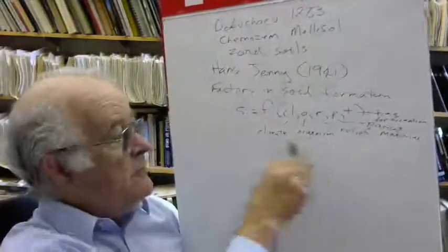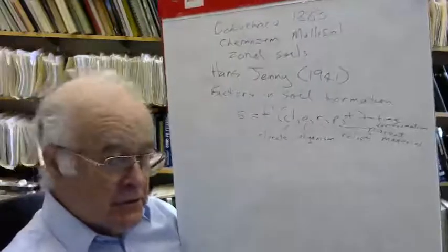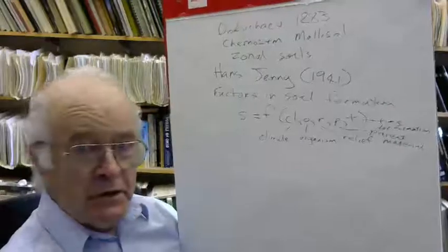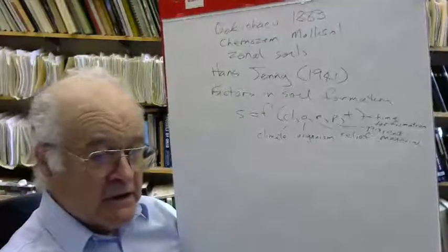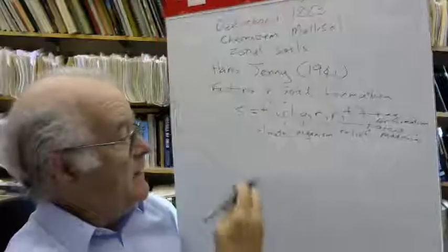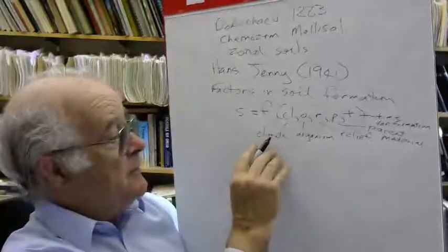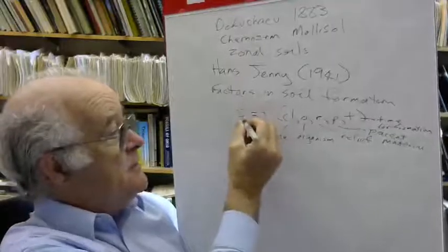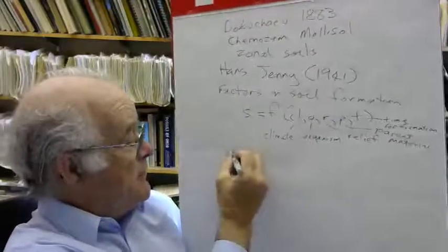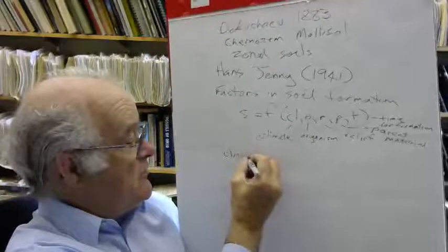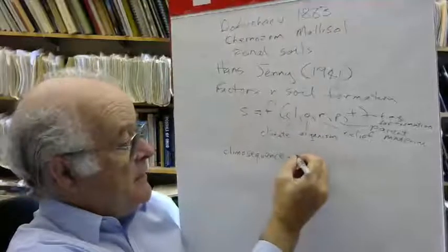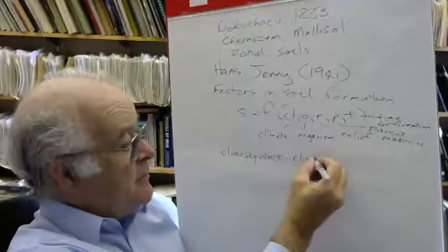Now in order to isolate these variables, what you need to have is a set of soils. We use a kind of space-for-time analogy to do an experiment. If you wanted to get an equation that related some particular soil feature to climate, for example, you would try to find a climo-sequence. I'll give you an example of this in a bit, and from that you would try to get a climo-function.